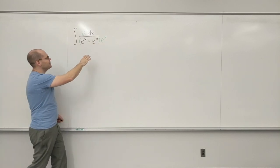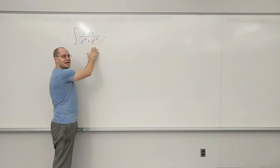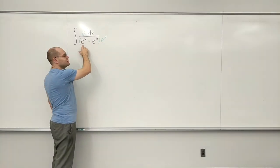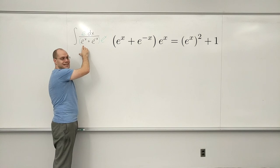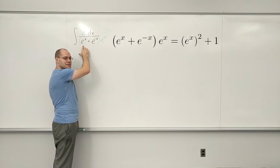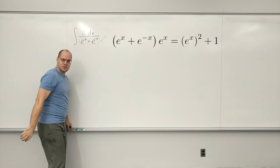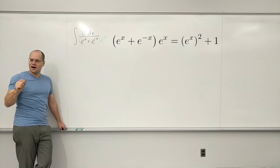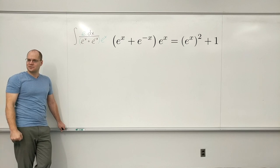Okay, not bad. But then I realize that if I actually go ahead and multiply this out, I get e to the x squared, right? E to the 2x, which is e to the x squared, and then plus 1. So that works. I instantly see arctan. Did you see the arctan already?